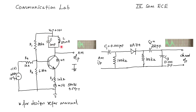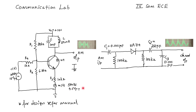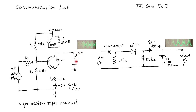We will get oscillations here. At this point, we are applying the message signal with a frequency of 500 to 700 hertz and an approximate amplitude of 4.5 to 5 volts peak-to-peak. We observe the output on the CRO. When we turn on the circuit after connecting all the components, we will see this output.